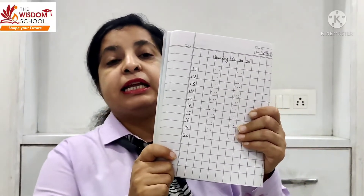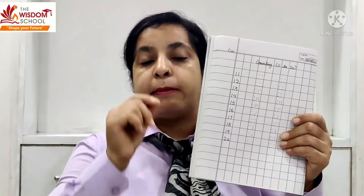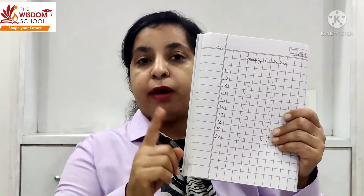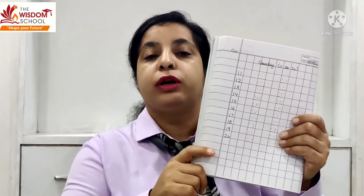आप अपनी मम्मा को बोलो आपको dots लगा कर दें — according to number। अगर 1 1 है तो 2 times 1 की dot लगाएं। 1 2 है तो एक बार 1 की, फिर 2 की। 1 3 में 1 और 3 की, 1 4 में 1 और 4 की। इस तरह आपकी मम्मा आपको dots लगा कर देंगी। आज हम 11 to 20 numbers की practice करेंगे अपनी maths की notebook में।